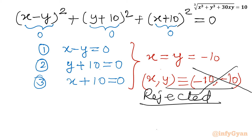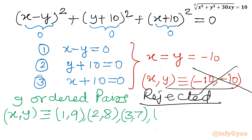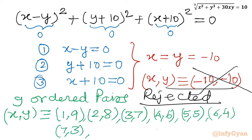Overall, there are only 9 ordered pairs as solutions. The ordered pairs are: (1,9), (2,8), (3,7), (4,6), (5,5), (6,4), (7,3), (8,2), and (9,1). That brings us to the end of this video. I hope you liked it — thank you friends for watching. Don't forget to like, share, and subscribe. Bye, till the next video. Good luck, take care of yourself, bye!